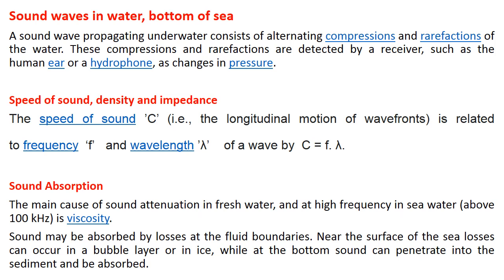Speed of Sound: The notation used to measure the speed of sound is C. The speed of sound C is given by C equals frequency (f) multiplied by wavelength (lambda), where f is frequency in hertz and lambda is wavelength in meters.